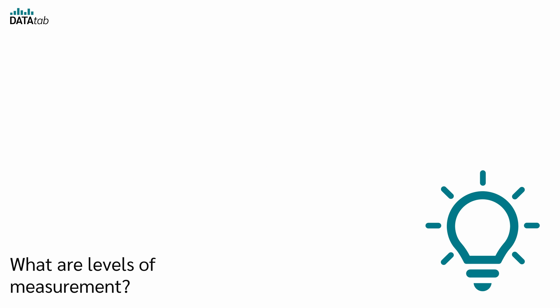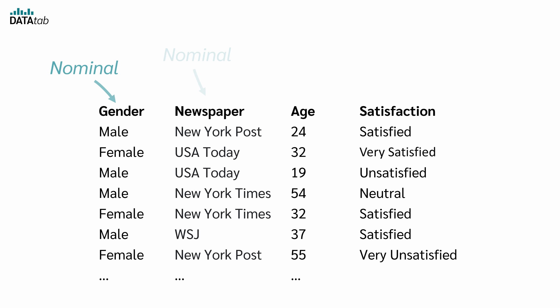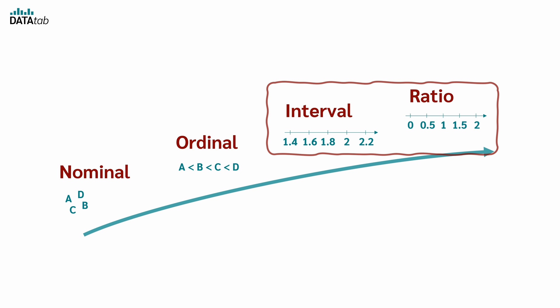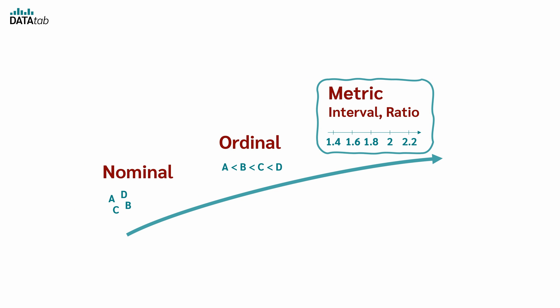What are levels of measurement? Levels of measurement refer to different ways that variables can be quantified or categorized. If you have a data set, then every variable in the data set corresponds to one of the four primary levels of measurement. These levels are Nominal, Ordinal, Interval, and Ratio. In practice, Interval and Ratio data are often used to perform the same analysis. Therefore, the term metric level is used to combine these two levels.